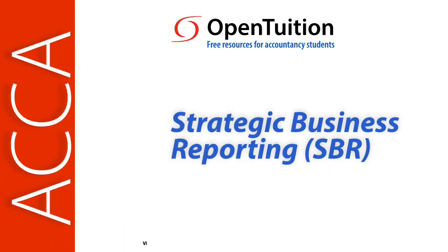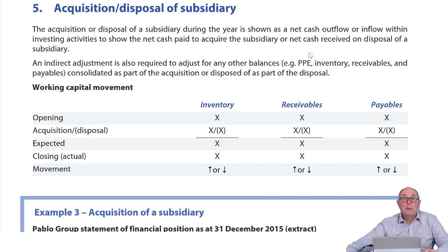This is a lecture from Open Tuition. To benefit from the lecture, you should download the free lecture notes from opentuition.com. Now we're going to look at what happens in the cash flow statement if you buy or sell a subsidiary in the year.